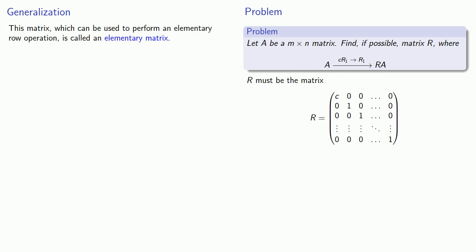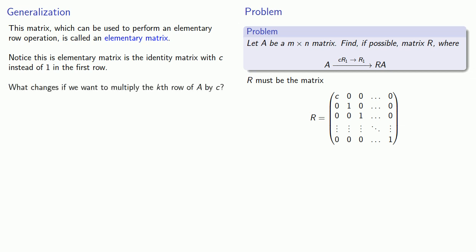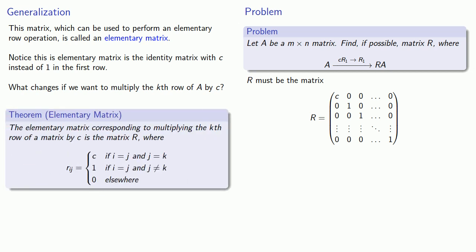Notice that this elementary matrix is the identity matrix with C instead of 1 in the first row. In general, if we want to multiply the kth row of A by constant C, the elementary matrix R has entries: C if i equals j and j equals k; 1 if i equals j and j is not equal to k; and 0 everywhere else. This is just the identity matrix with a C in the kth diagonal position instead of a 1.